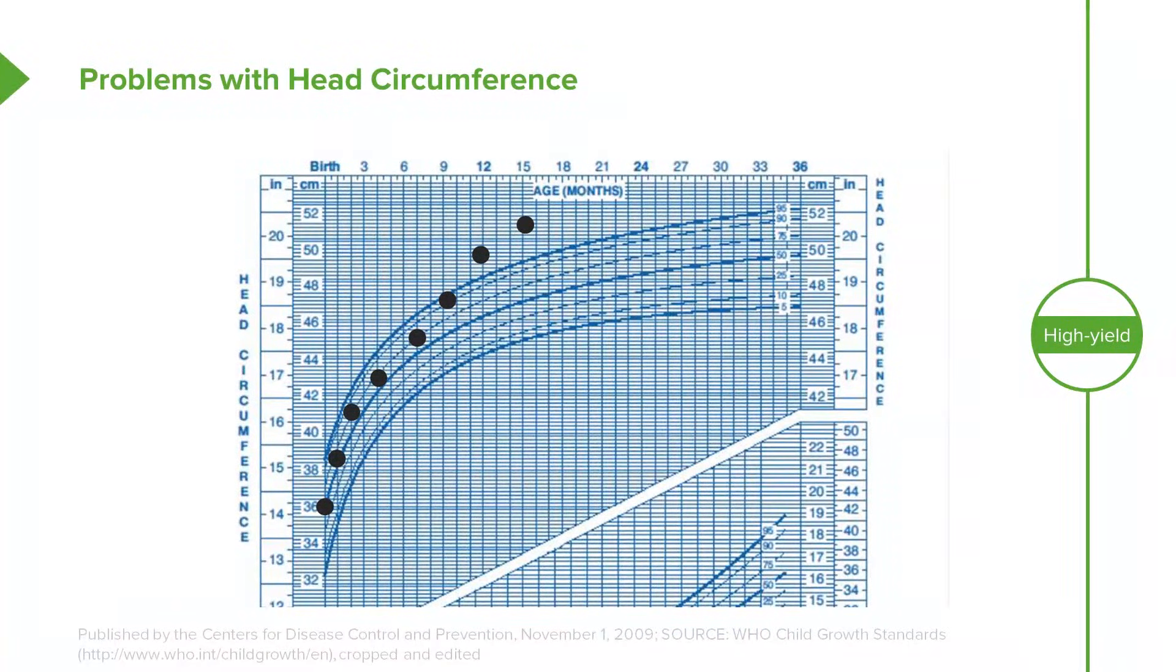We also track, in addition to weight and height, head circumference in early childhood. Here's a hypothetical child you might see with an abnormal head circumference. You can see why following over time is important.